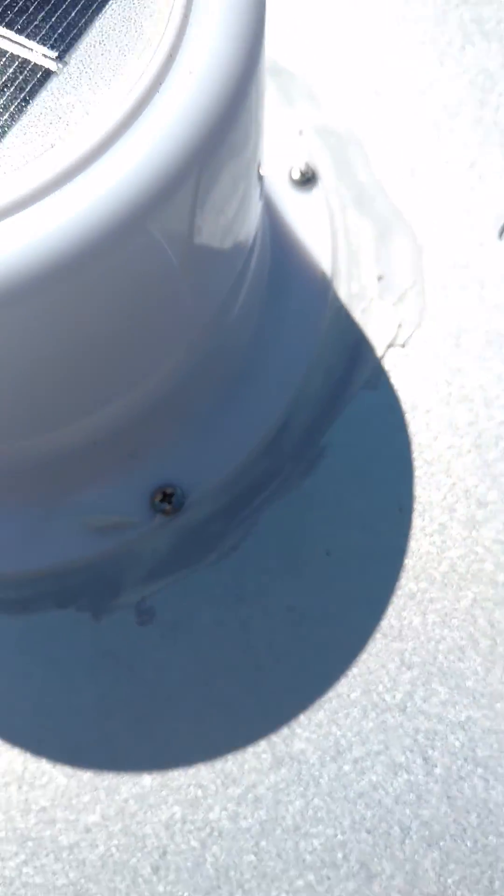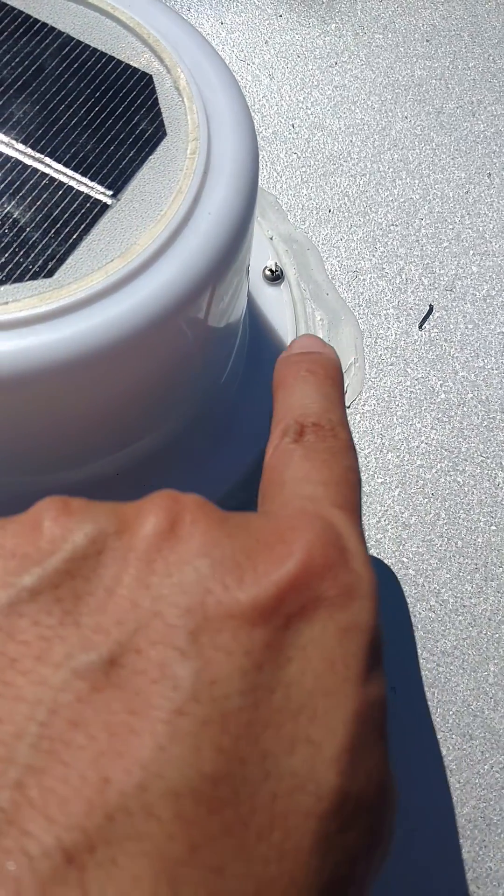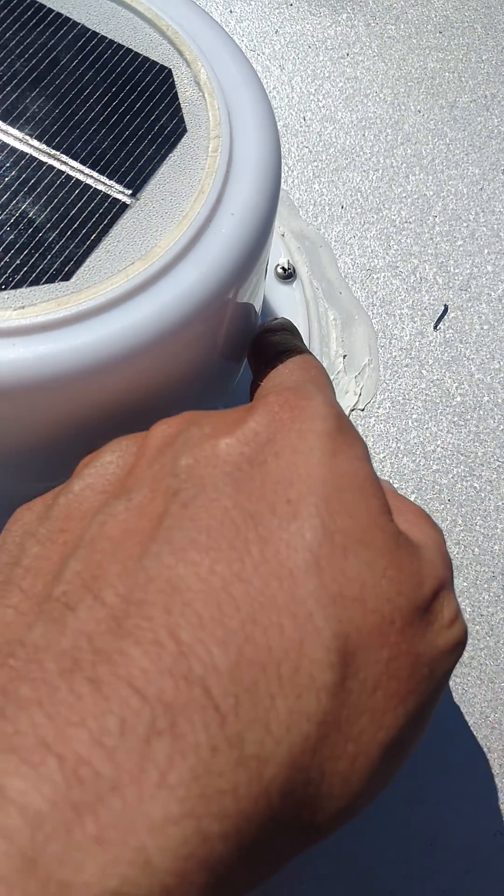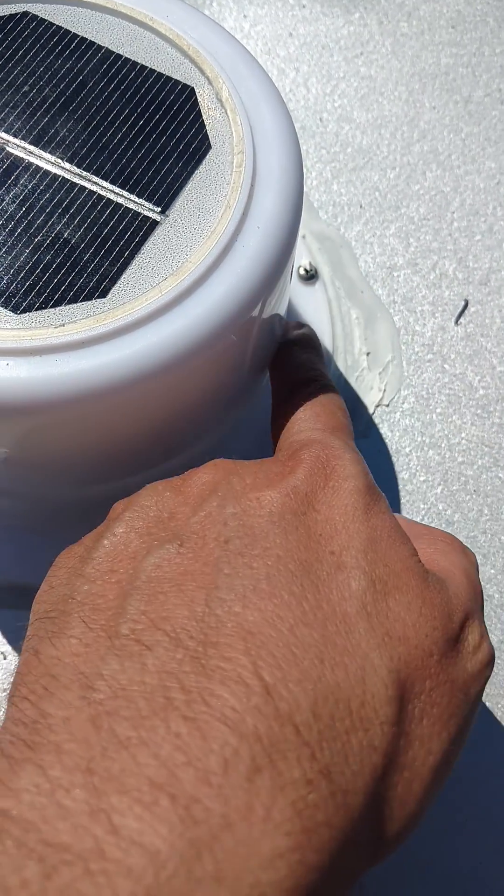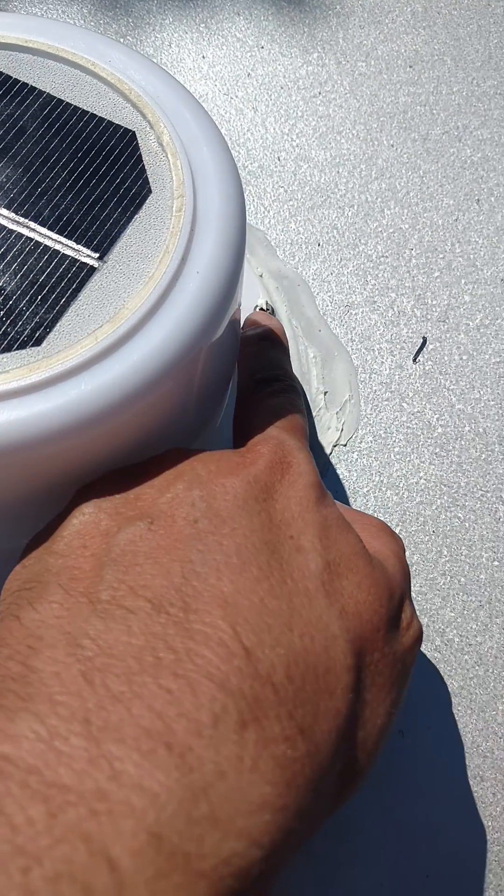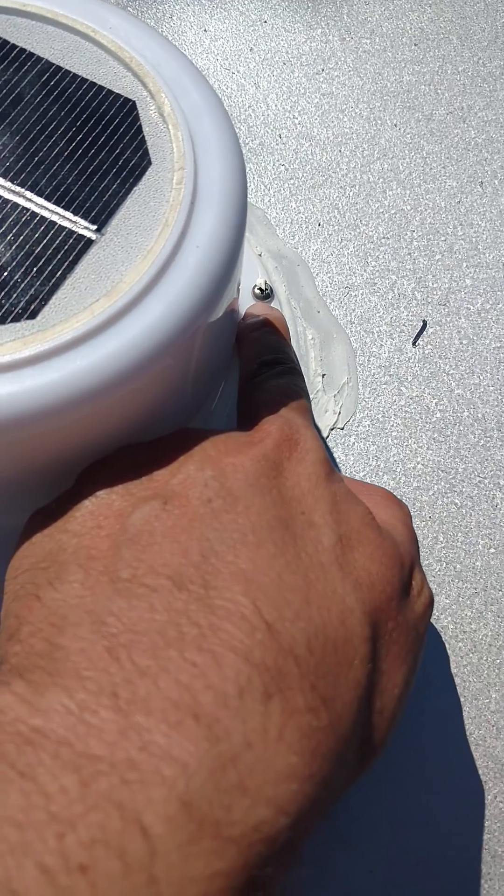We used a caulking gun to put the caulk right on the other side of this surface and we just mounted it in place. We were sure to pre-drill pilot holes before we put this in.